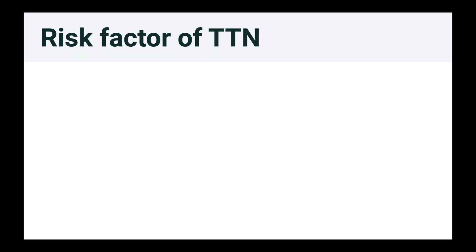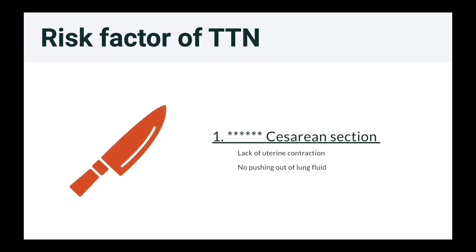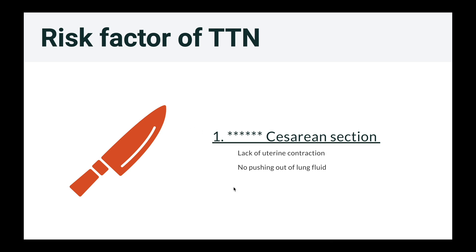What are the risk factors? The first and most important risk factor is cesarean section. When you have a cesarean section, there is no uterine contraction and the baby does not go through the vaginal canal. Therefore, there is a risk of lack of pushing out of the lung fluid — the fluid stays inside the lung and leads to respiratory distress. This is TTN.